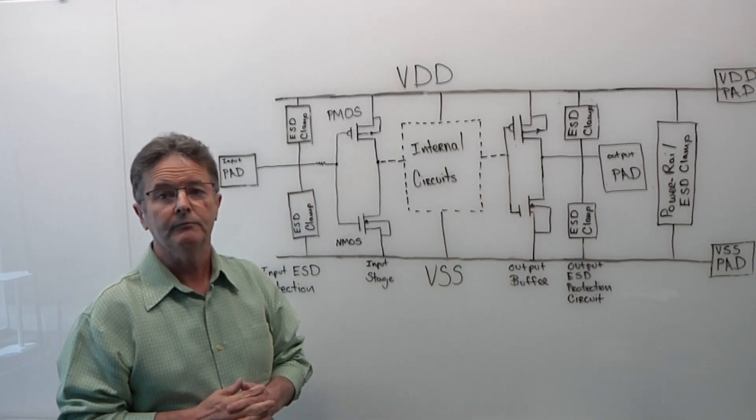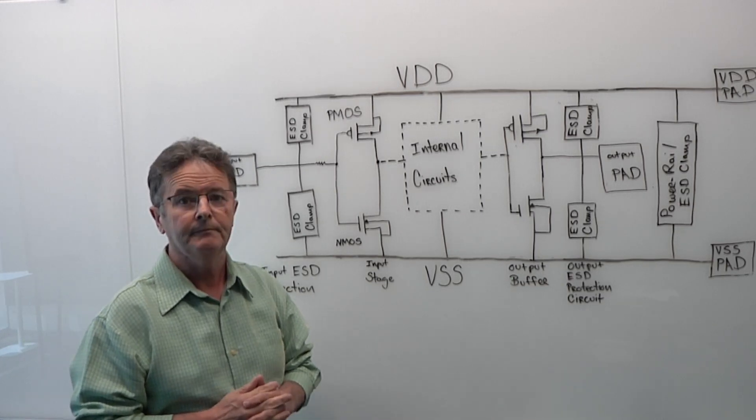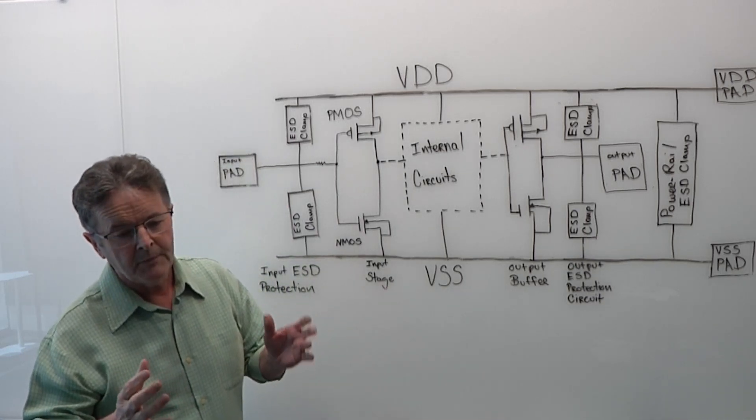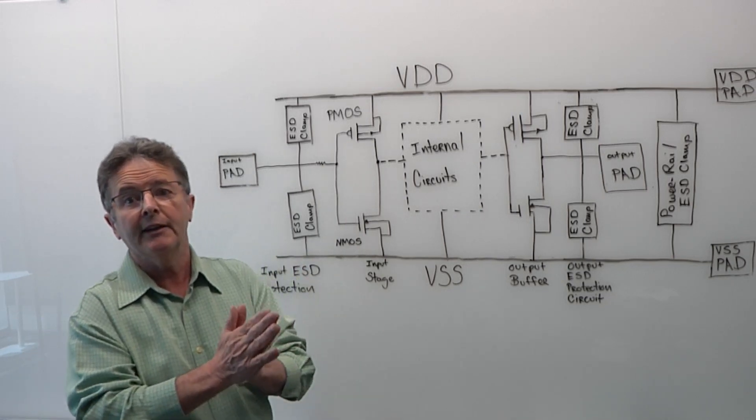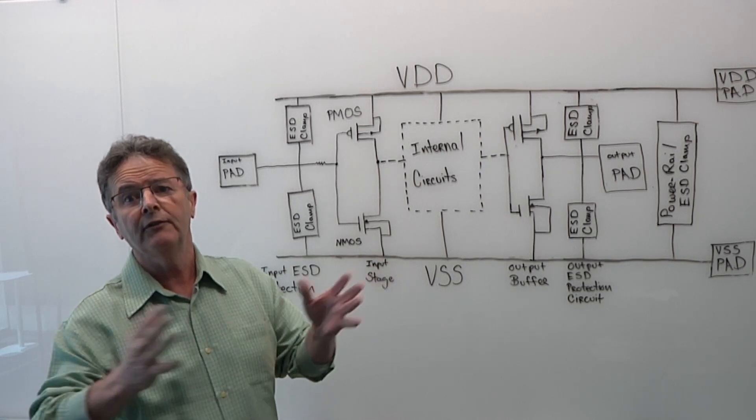This becomes more complicated as you start getting into heterogeneous designs and more domain-specific designs because each one is a little bit different, right? Correct, yes. So many of the failures you see today are from domain to domain. Because the grounds are connected through back-to-back diodes typically, but the paths are longer. So the resistance goes up.